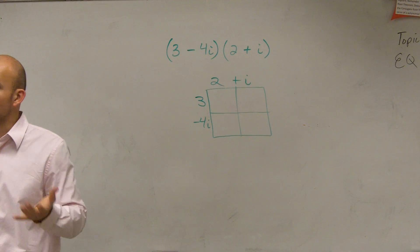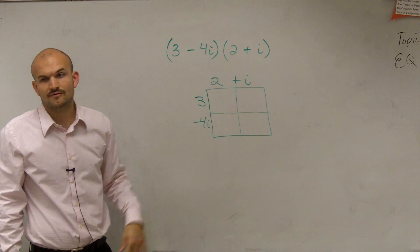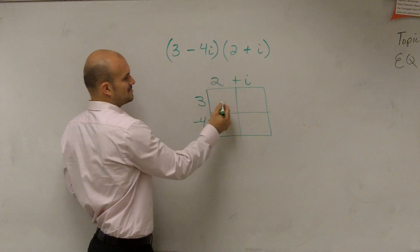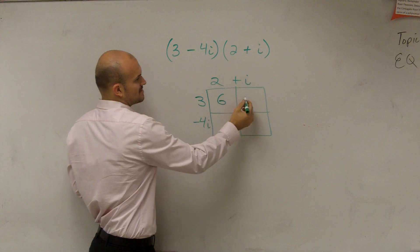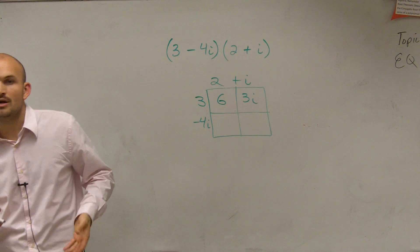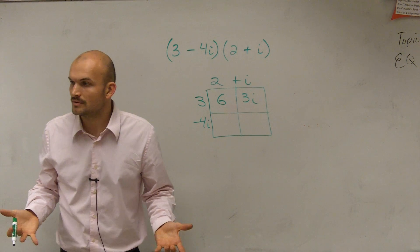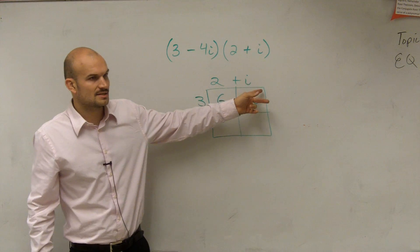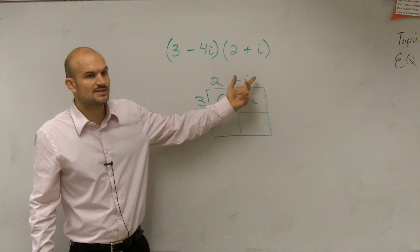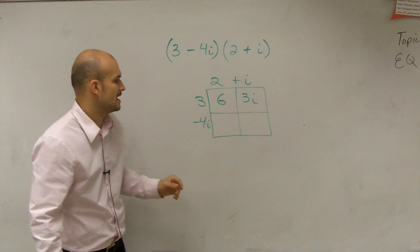To find the product, you multiply the length times width for each box. So 3 times 2 is 6. 3 times i is 3i. When you multiply a real number times a complex number, we treat our complex number like a variable. You could treat your i just like an x. Because 3 times x is 3x, 3 times i is 3i.